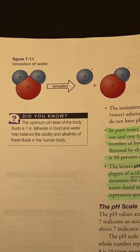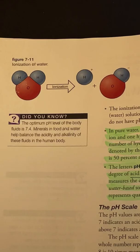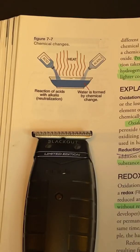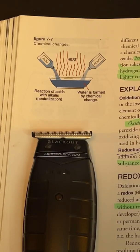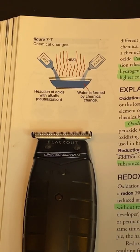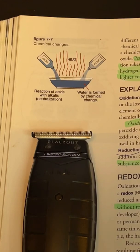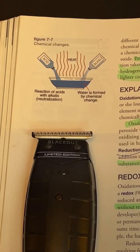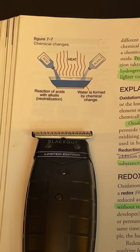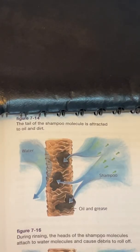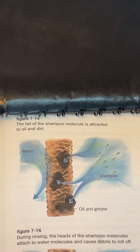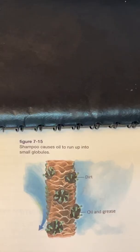Water and Surfactants. Surfactants are the second most common ingredients found in shampoos and act as a cleansing and emulsifying or foaming agent. The tail of the shampoo molecule is attracted to oil and dirt.